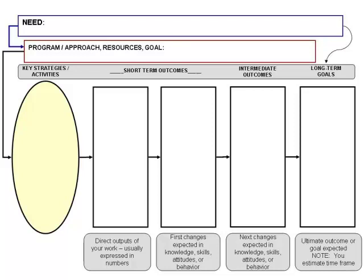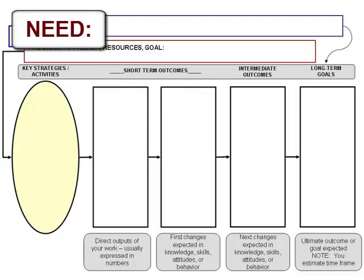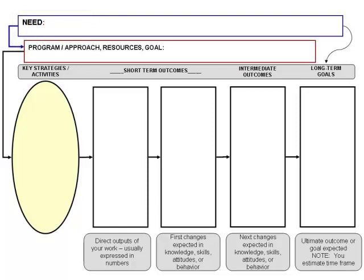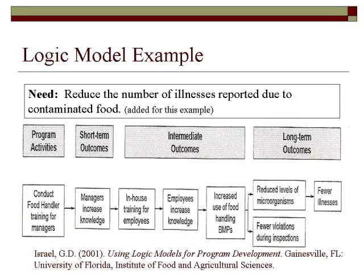For instance, if your program has multiple short-term outcomes, then the need can be moved to the top of the model, as in this example, to allow space for an additional short-term outcome column. To fully grasp what each component is designed to capture, it may be helpful to consider an example at this point. Let's begin by examining a very basic logic model. This example will enable you to focus on the components of a logic model prior to applying them within education.